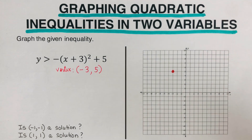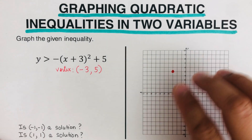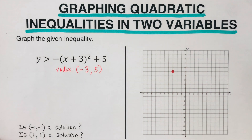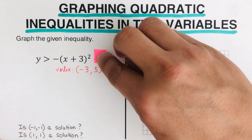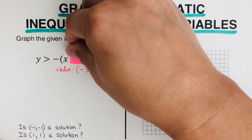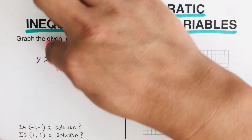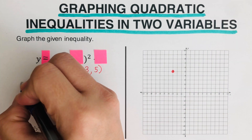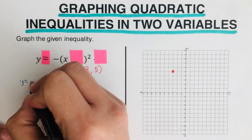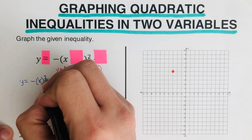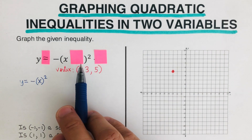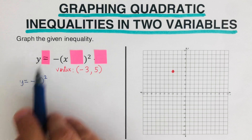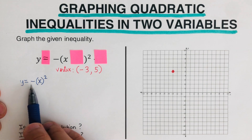The next step is to write the equation to be able to sketch the graph, so we need to determine where the other points go. The trick is to cover the h and the k, then change the inequality to an equal sign. We are left with the equation y = −x², which is the working equation we will use.